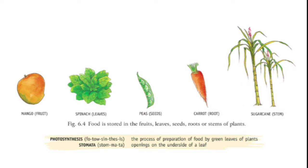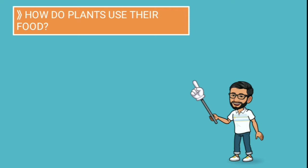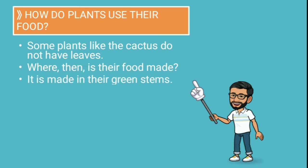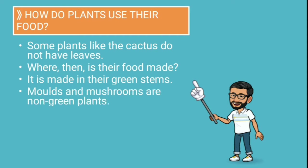Some plants like cactus do not have leaves. So where is their food made? It is made in their green stem. Because they don't have leaves, they prepare their food in their stems.